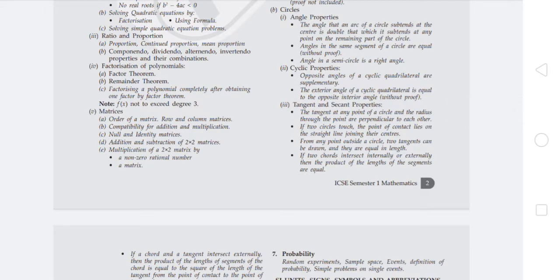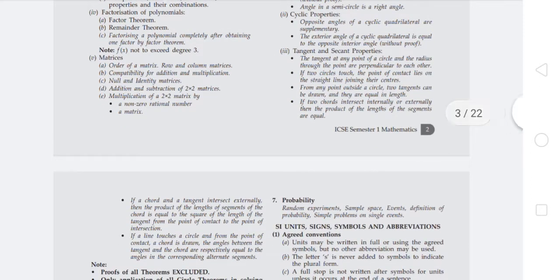If f(x) is degree 3, then you have no need to calculate that. In Matrices chapter: order of matrix, row and column matrix, compatibility of addition and multiplication, null and identity matrix, addition and subtraction of 2x2 matrices, and multiplication of 2x2 matrix by a non-zero rational number.